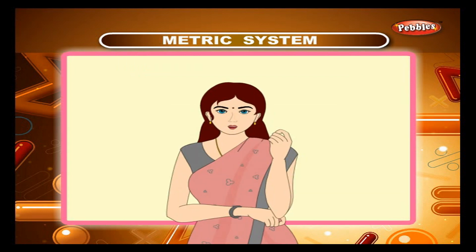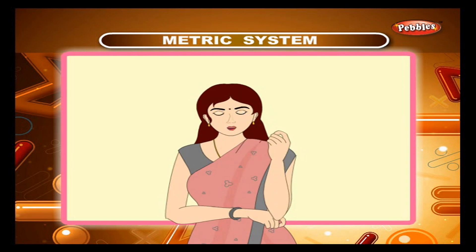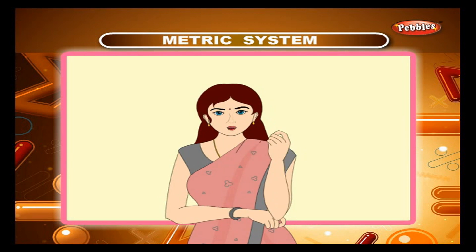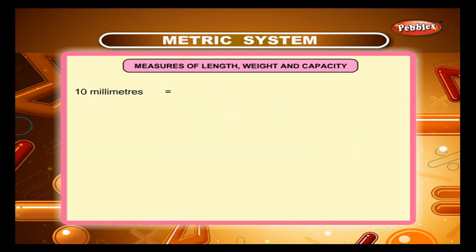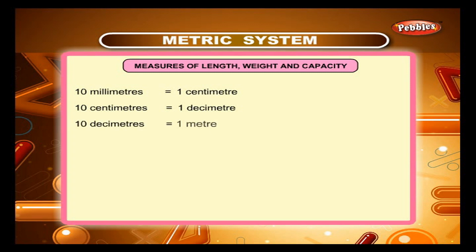The metric system is like the decimal system. From the chart you can conclude the following: 10 mm is equal to 1 cm; 10 cm is equal to 1 dm; 10 dm is equal to 1 m.